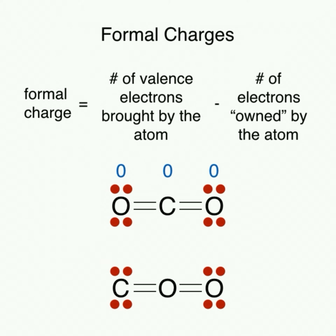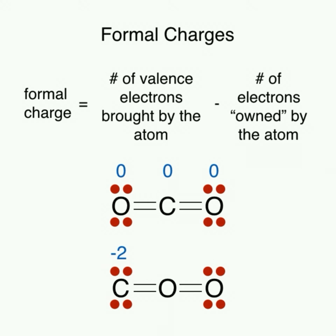In our second isomer, our carbon once again brought four valence electrons, but it now owns six electrons in the compound, giving it a formal charge of negative two. Our central oxygen brought six valence electrons but now only owns four, giving it a formal charge of positive two. Our second oxygen brought six valence electrons and owns six, giving it a formal charge of zero. We can see that our second isomer has much larger formal charges, meaning it's not nearly as important as our first isomer. Note that the formal charges always add up to the overall charge of the molecule.